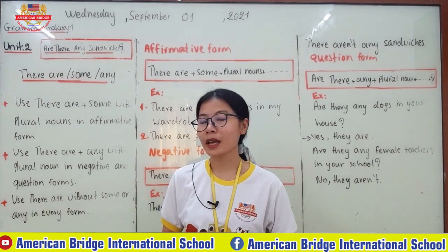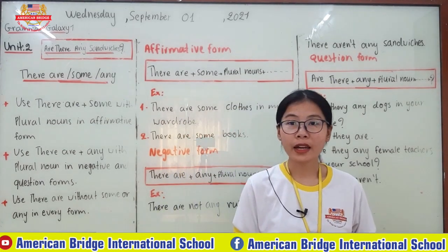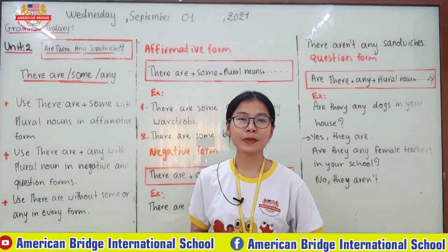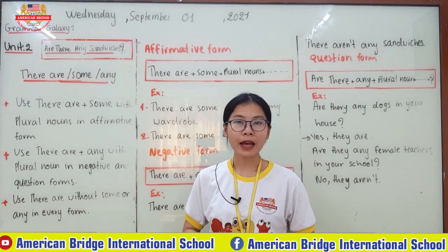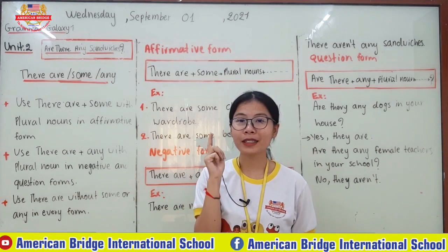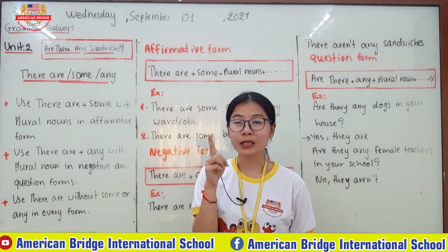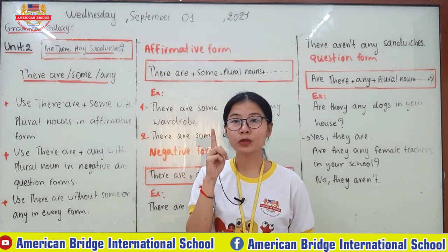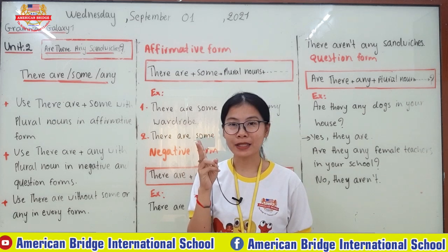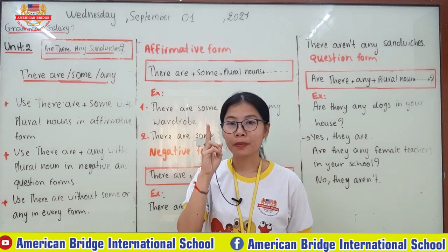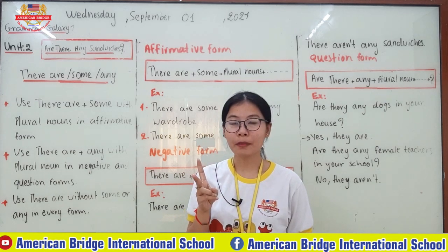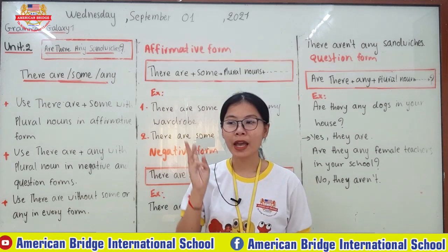So do you know how to use 'there is' with 'some' or 'any'? There are three ways you can use 'there is.' First, 'there is' plus 'some' — you use this with a non-count noun in affirmative form. Then 'there is' plus 'any' — the same non-count noun, but used with negative and question form.